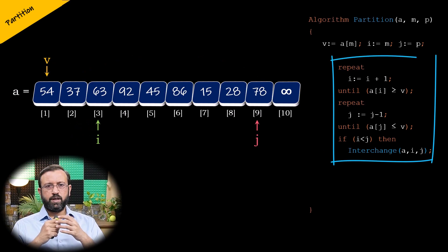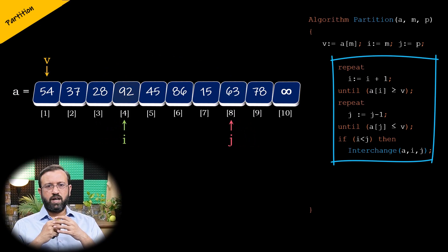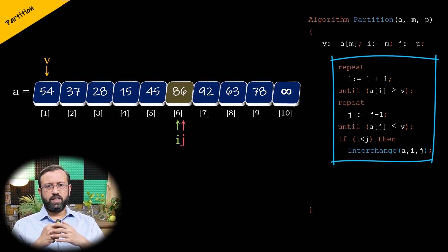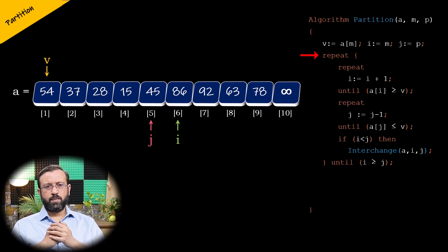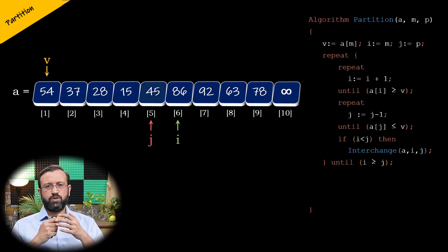The loop for incrementing the variable i and decrementing variable J must continue until variable i is less than variable J. And once i crosses J, then we need to stop. Therefore, we will have the repeat-until loops for index i and index J within an outer repeat-until loop, that is to execute the loops until index i is greater than index J. Once the index i becomes greater than index J, then the outer repeat-until loop will terminate, which means we found the position of the pivot element, which is at index J.